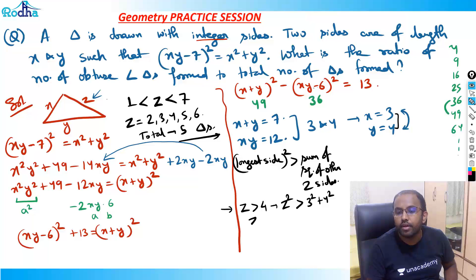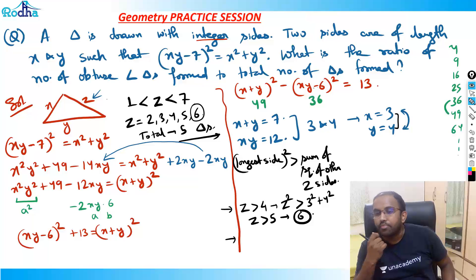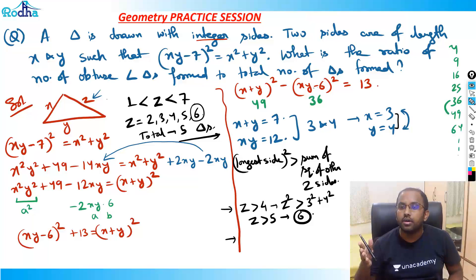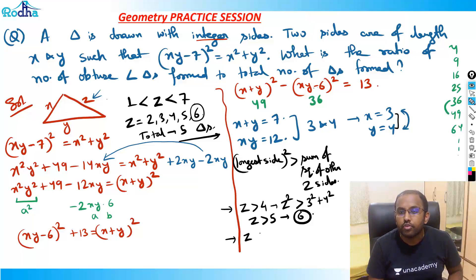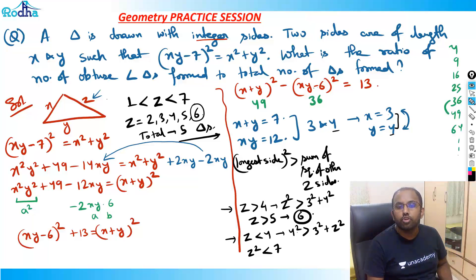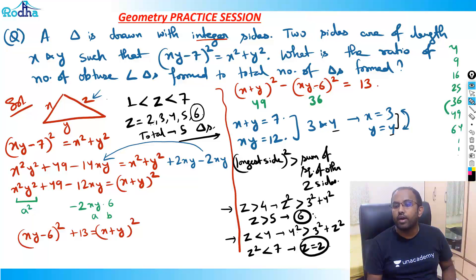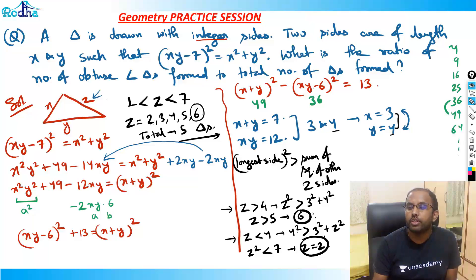When Y = 4 is the longest side: 16 > 9 + Z² requires Z² < 7, so Z = 2 qualifies (Z² = 4 < 7). For Z = 3: 16 > 9 + 9 = 18? No. So the obtuse triangles are Z = 2 and Z = 6 — that is 2 obtuse triangles out of 5 total. The answer for the ratio is 2 to 5.